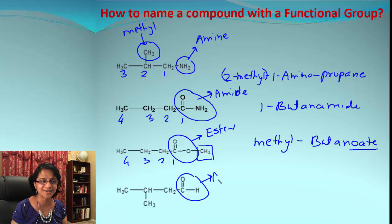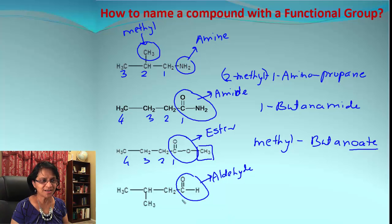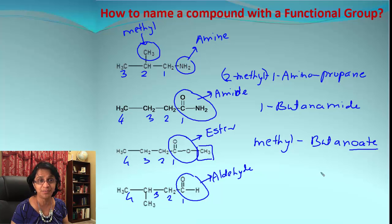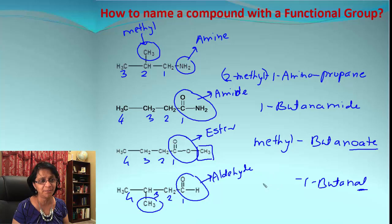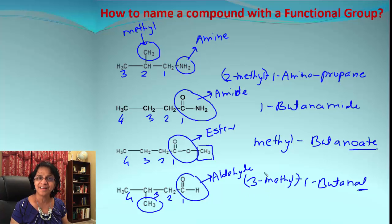One more to go. CHO corresponds to aldehyde. We have a straight chain of one, two, three, four — that's butane — so since we have an aldehyde it will be butanal. Aldehyde is at position number one, so we can say 1-butanal, and at position number three we have a methyl group, so the full name is 3-methyl-1-butanal.